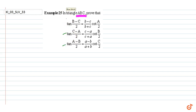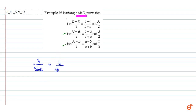Now, in a triangle ABC, by the sine law, we can write a by sin A equal to b by sin B equal to c by sin C equal to K, say.